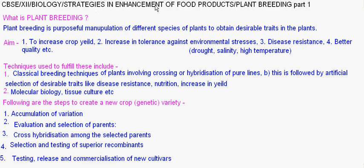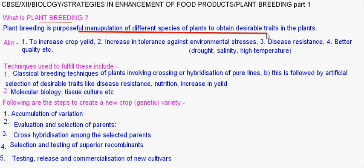Strategies in Enhancement of Food Products. The topic is Plant Breeding Part 1. Plant breeding is the purposeful manipulation of different species of plants to obtain desirable traits in a specific plant species.